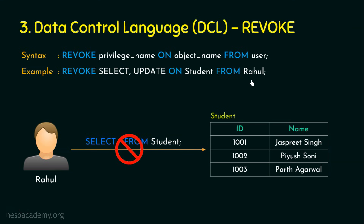In this presentation, we have seen the three-tier architecture and the DCL commands GRANT and REVOKE. I hope you enjoyed this presentation — thank you for watching.